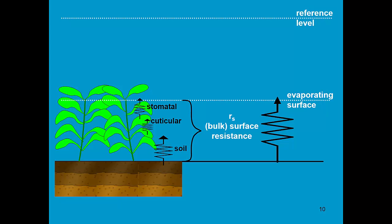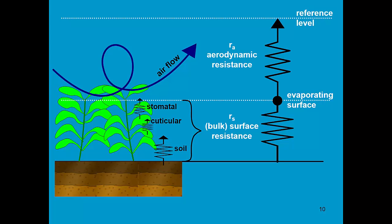There is another resistance, which is the aerodynamic resistance, and is linked with the airflow. When there is a lot of wind and the crop is large, the aerodynamic resistance is small. Those two resistances are put in theory and determine the crop evapotranspiration under non-standard conditions.